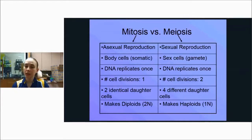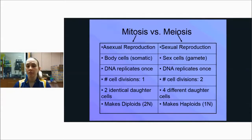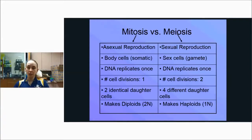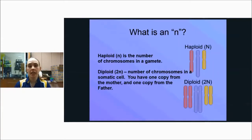In mitosis, it divides one time to produce two daughter cells that are identical. In meiosis, it divides two times and produces four daughter cells that are different from each other. The end result of mitosis is diploid cells with 46 chromosomes, referred to as 2N. The end result of meiosis is haploid cells referred to as N, with only 23 chromosomes. N is the number of chromosomes. Haploid is the number of chromosomes in a gamete, and diploid is the number in a somatic cell.